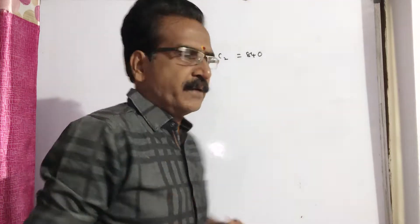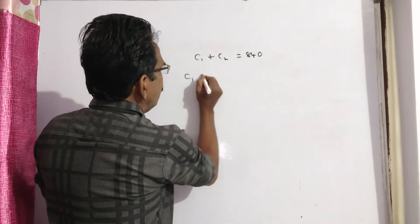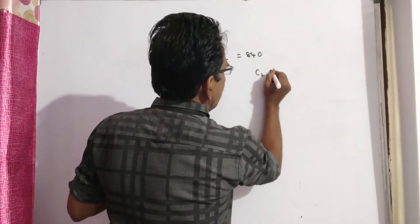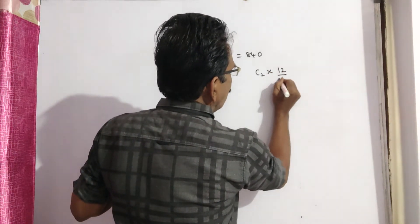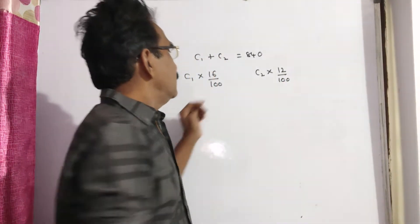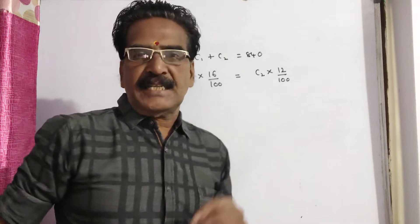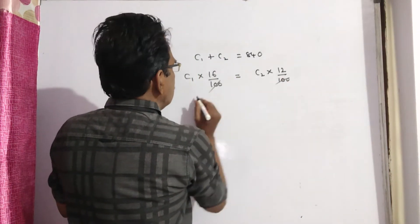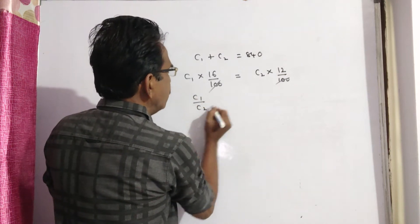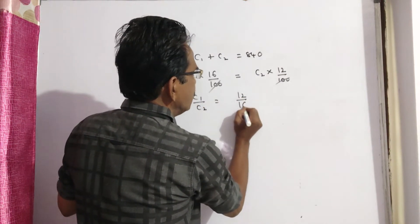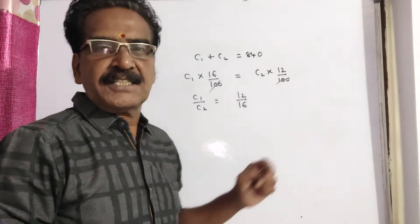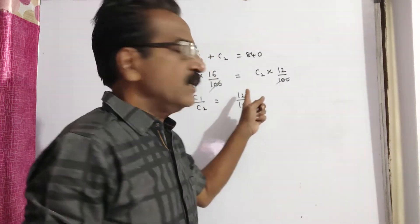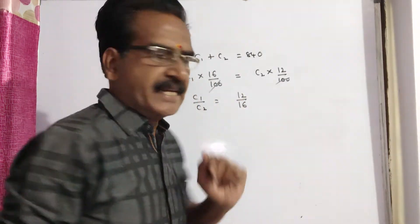Then there is no loss, no gain. So the profit on the first watch is 16% and the loss on the second watch is 12%. These two must be equal because there is no gain, no loss in the whole transaction. So C1 by C2 is equal to 12 by 16. This is the ratio of C1 and C2. We know C1 plus C2, so we can divide Rs. 840 in the ratio 12 is to 16 to get the cost price of each watch.